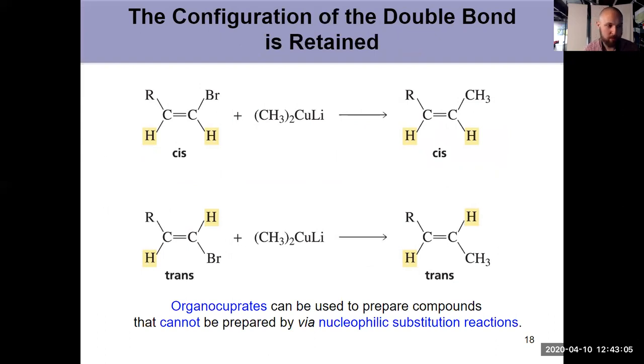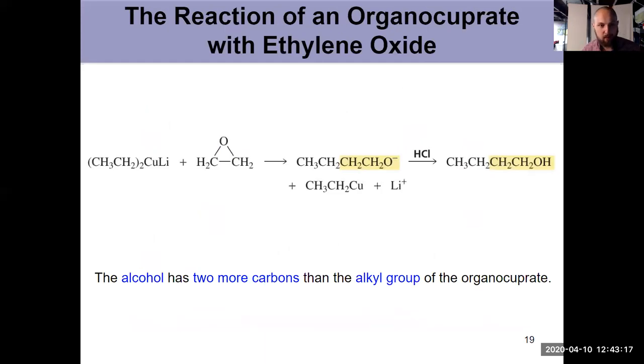If it was cis it stays cis, if it was trans it stays trans. We just swap our halogen for whatever the alkyl group on my organocuprate was. Very simple. One other consideration with our organocuprates is the fact that they are nucleophiles so they can react with electrophiles.